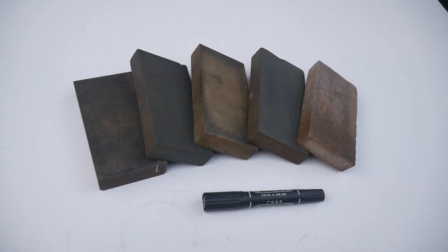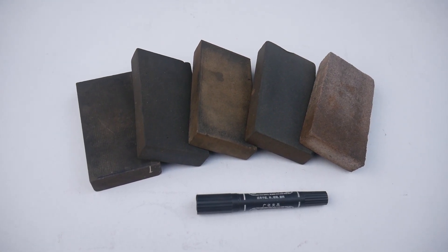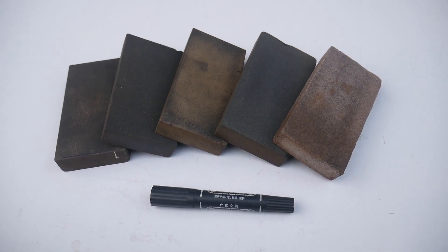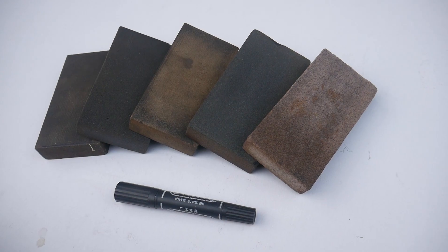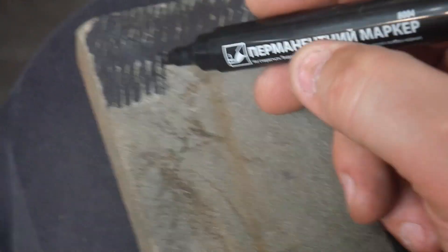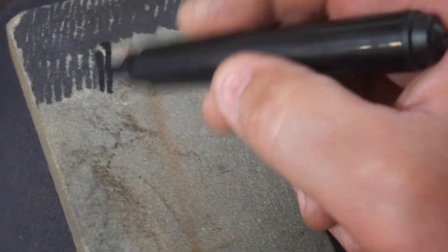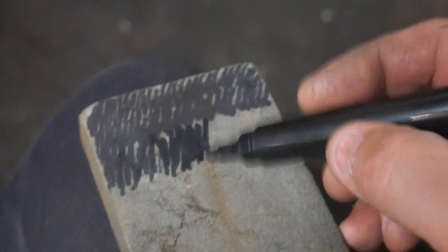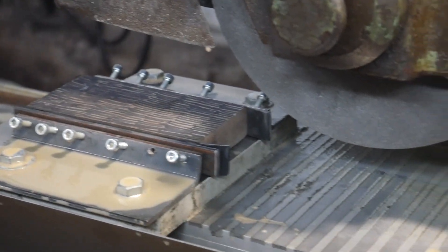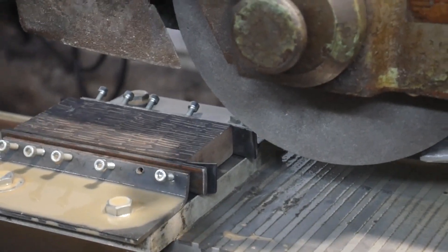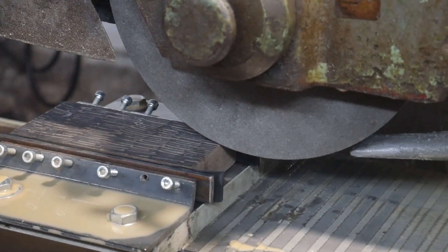By the time of video shooting, I had five stone blanks for cutting. For clarity, before grinding, I paint the surface with a marker. A mandrel with a stone is installed on a grinding machine.